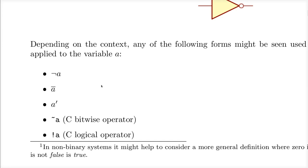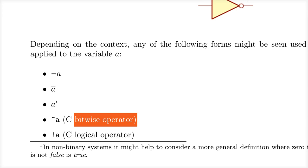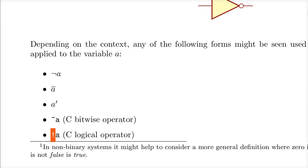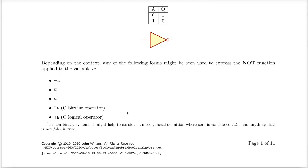You need to understand the notation being used when reading any text. This handout tries to maintain the highest level of consistency and points out pitfalls you'll encounter on the internet. When you write a program in C or any language derived from C — Python, Java, JavaScript — the tilde in front of a variable represents a bitwise NOT operation, and the exclamation point (sometimes called a bang or ball bat) represents the logical NOT. We'll cover the distinction between bitwise and logical operators later when we get to programs.